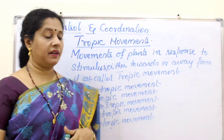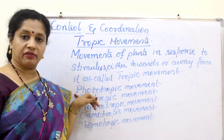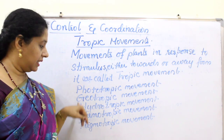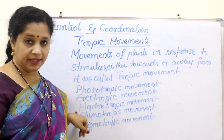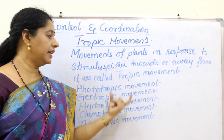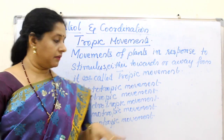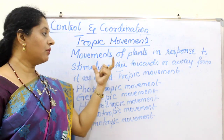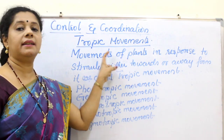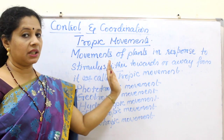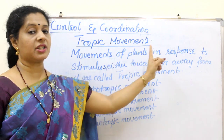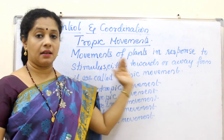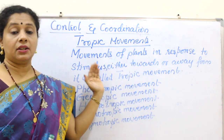Tropic movements can be of different types: phototropic movement, geotropic movement, hydrotropic movement, and chemotropic movement. These four are given with terminologies in the textbook. You have to learn the definition of all four plus tropic movement. I will teach you how to learn all four from just one definition. Movements of plants in response to a stimulus, either towards or away from it, is called a tropic movement.